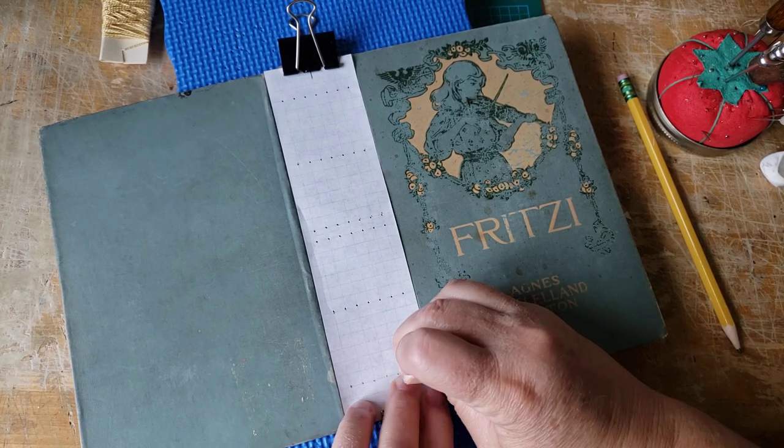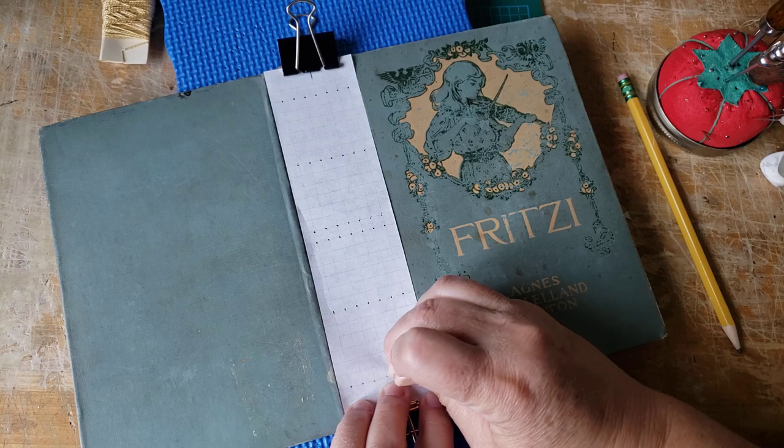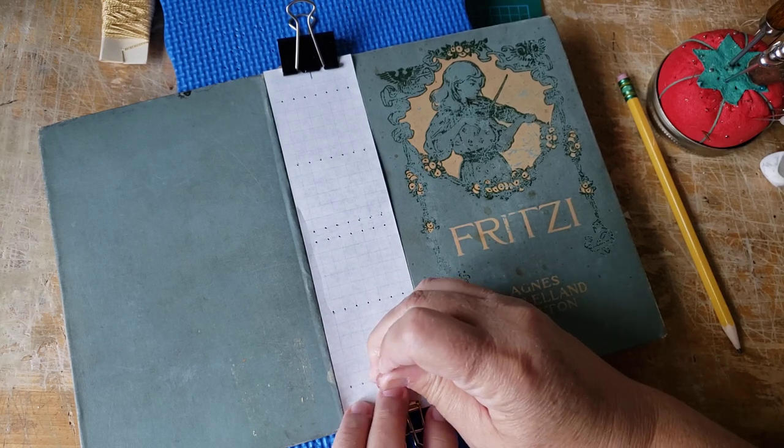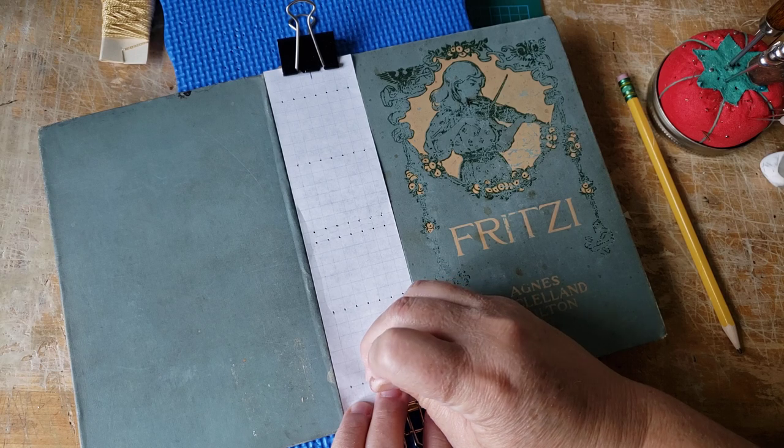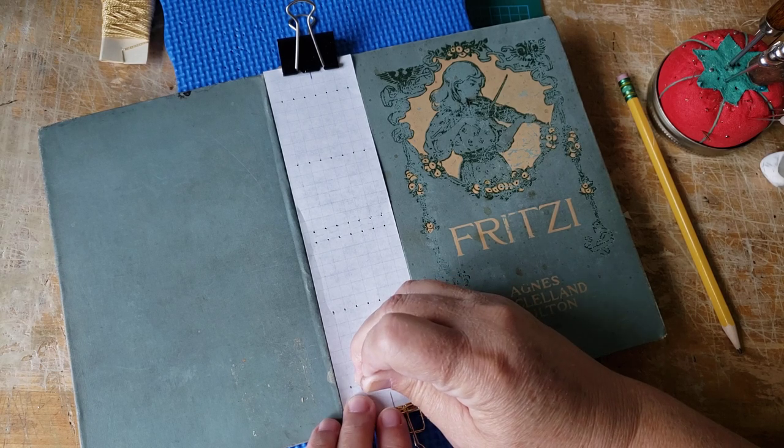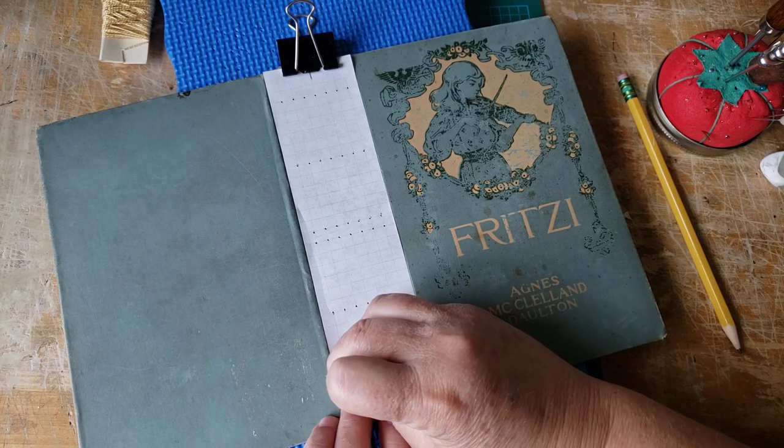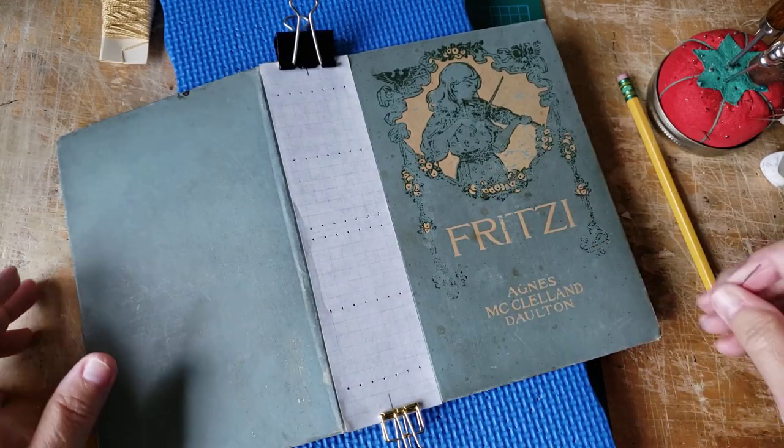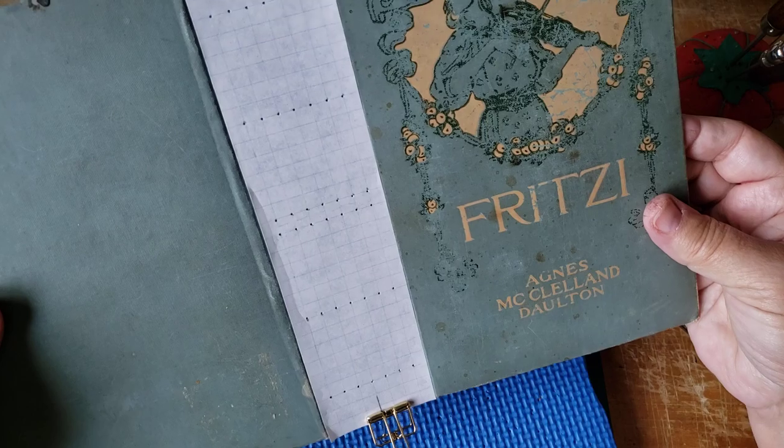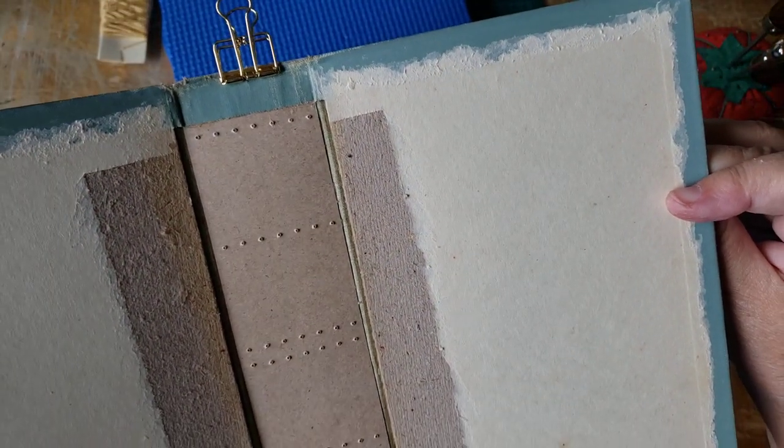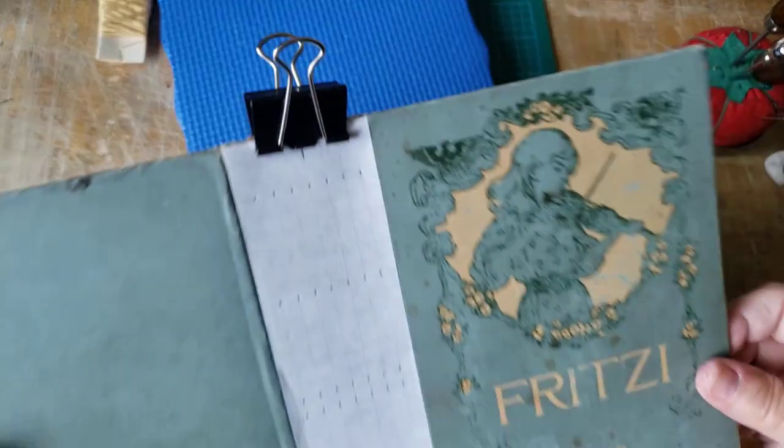In the previous episode, we got things ready to sew faux exterior signature threads down the spine of this old book. I'm going to hold it up to my window and make sure I didn't forget any holes. No, it looks like I didn't. Alright, we're good to go.